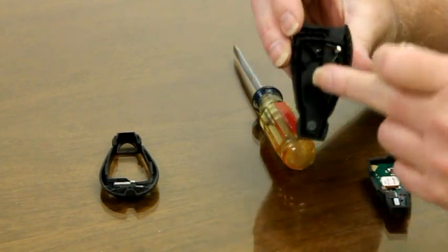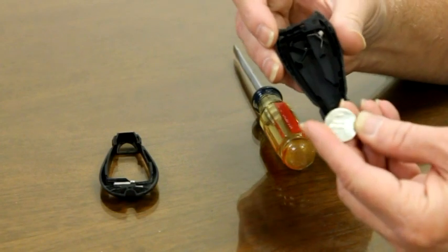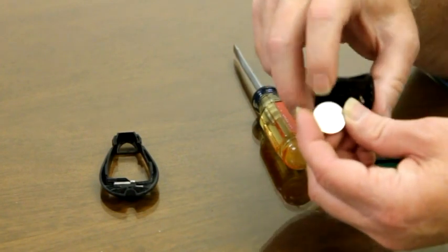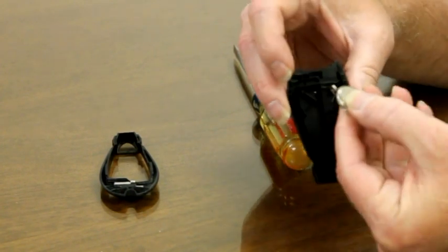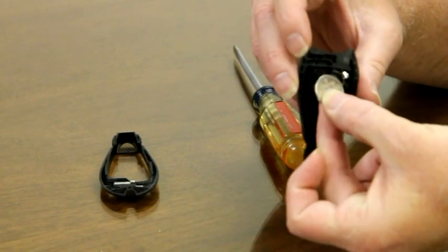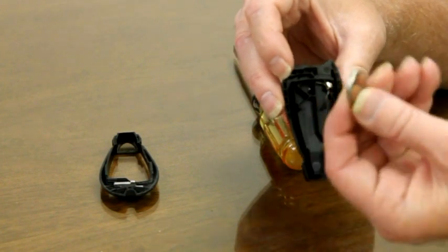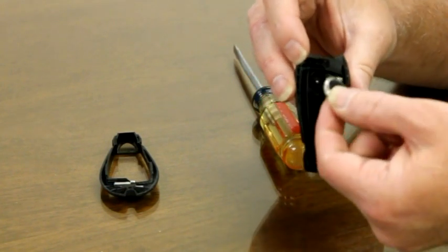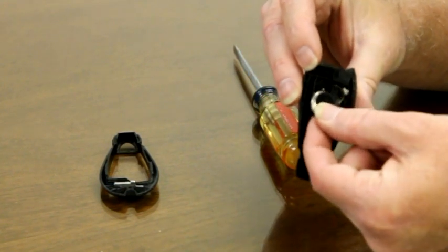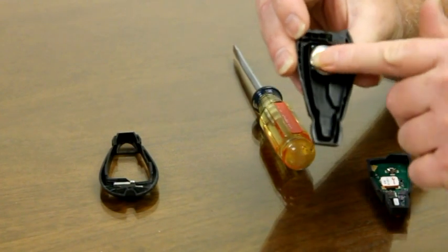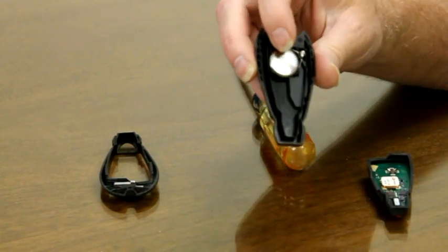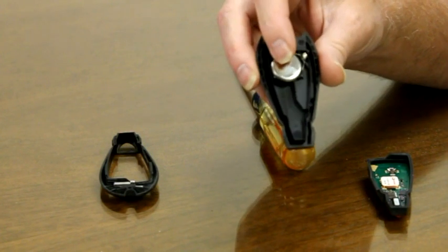When you're putting in your new one, what you want to be careful about is where the writing is, is the side that goes face down. It almost appears that you'd put this in backwards just by looking at it. In fact, I did on the first one I did. You're actually going to put it face down into the fob.